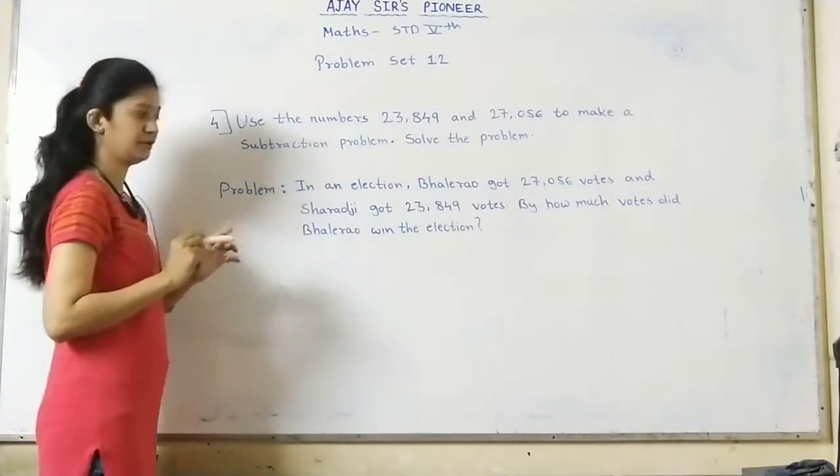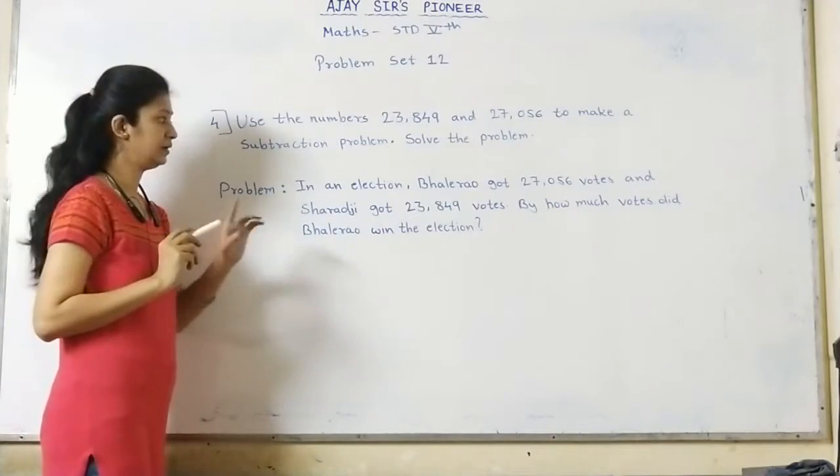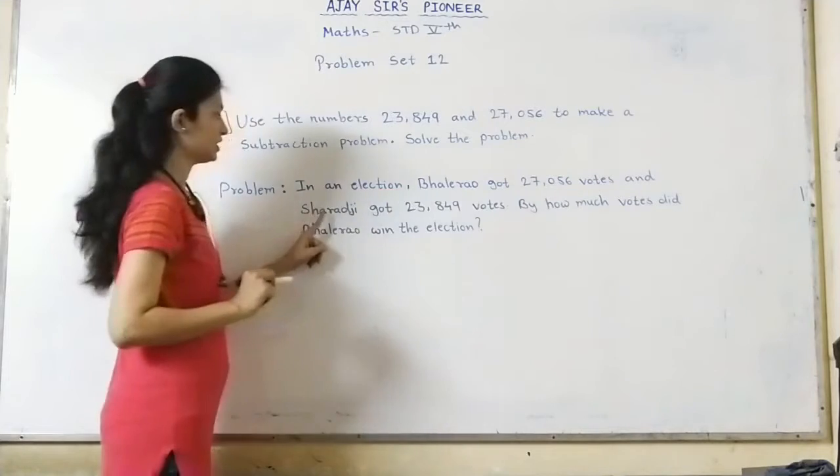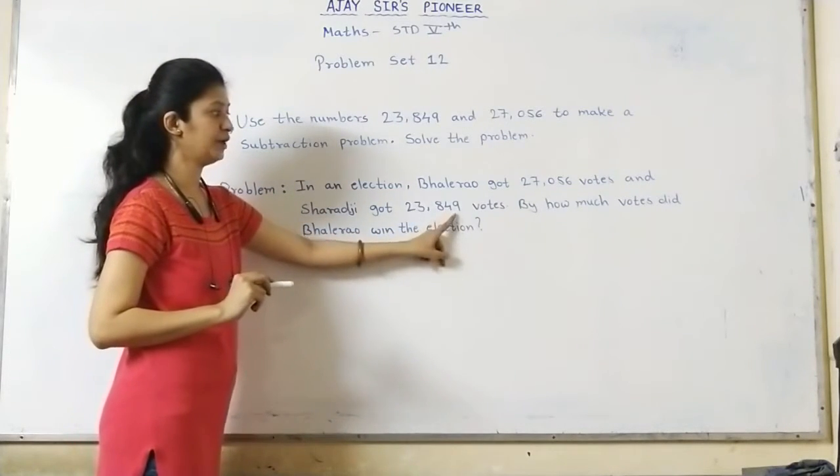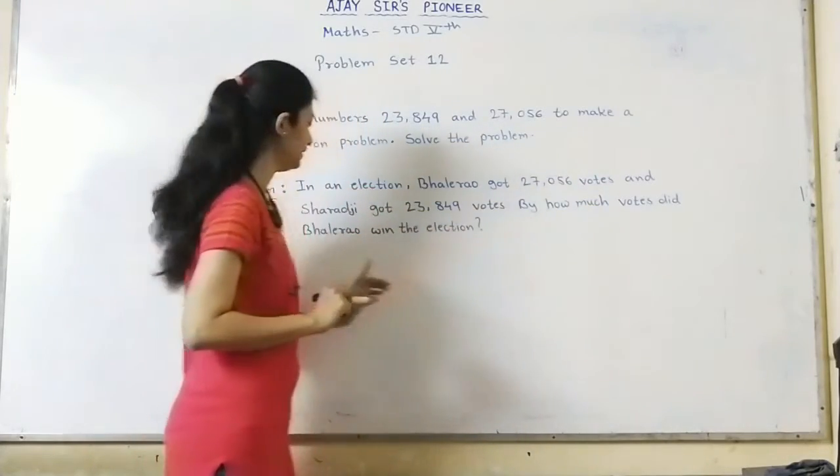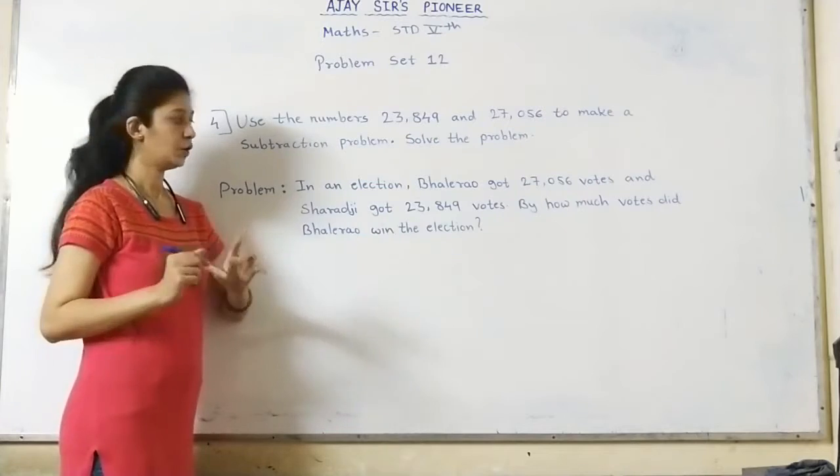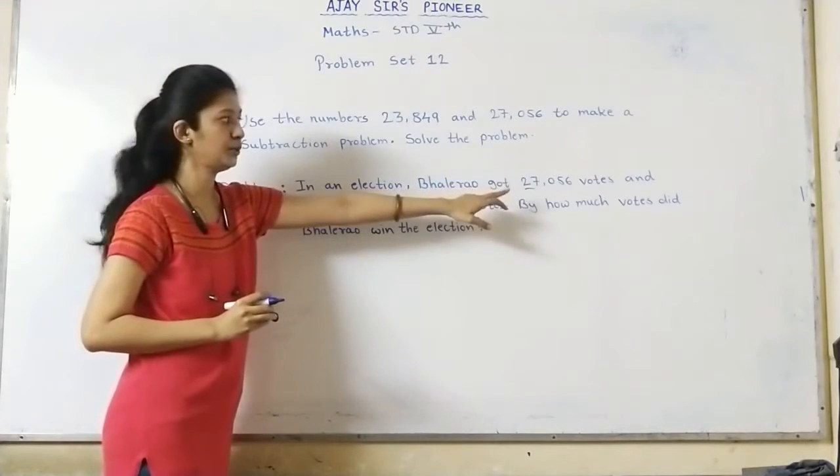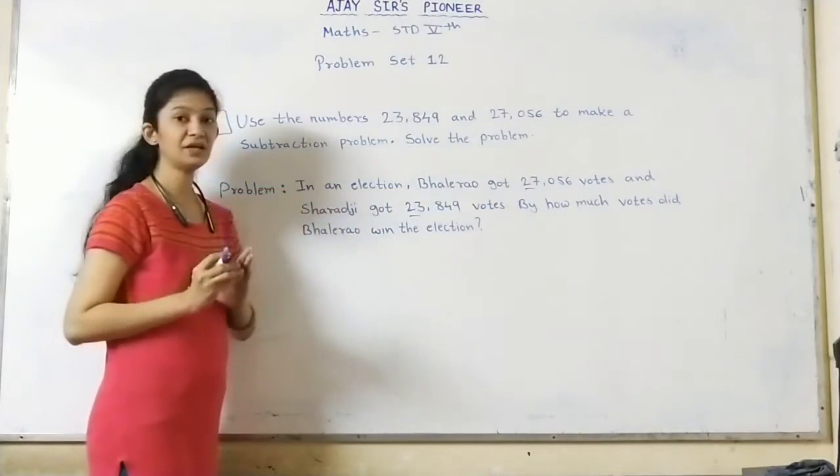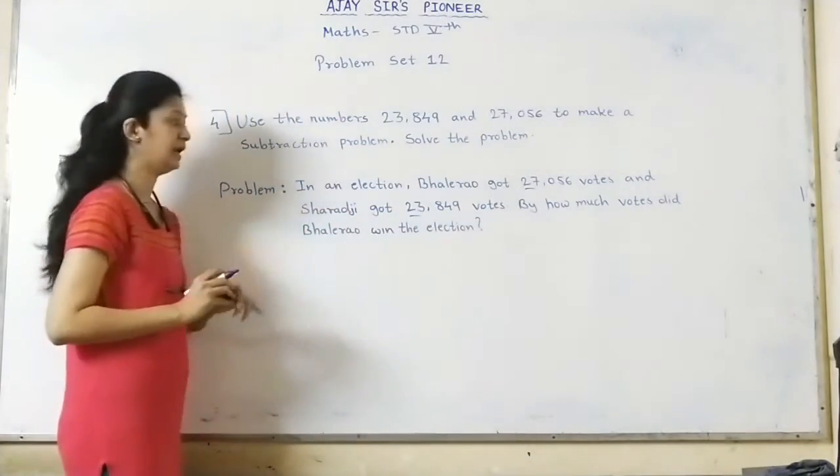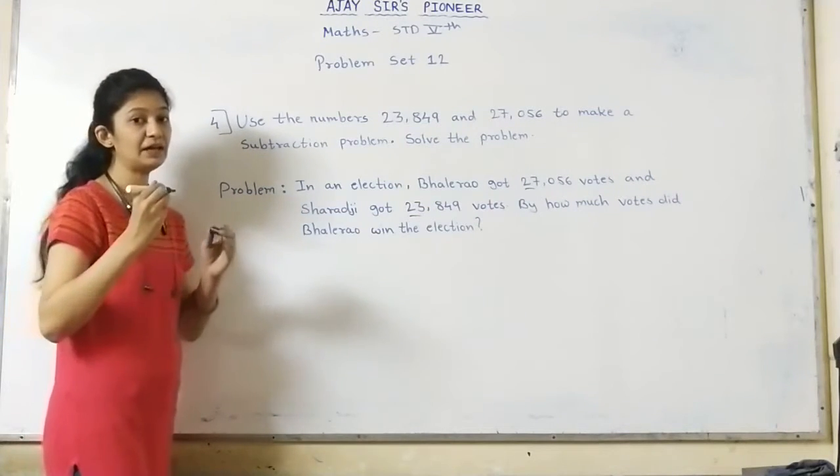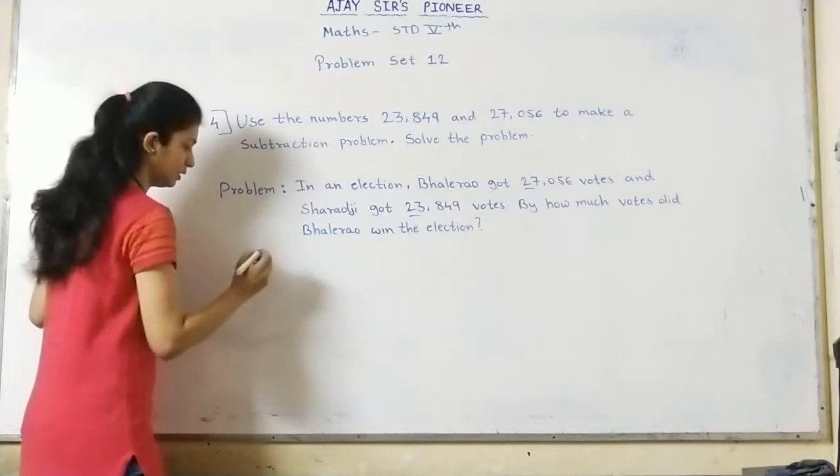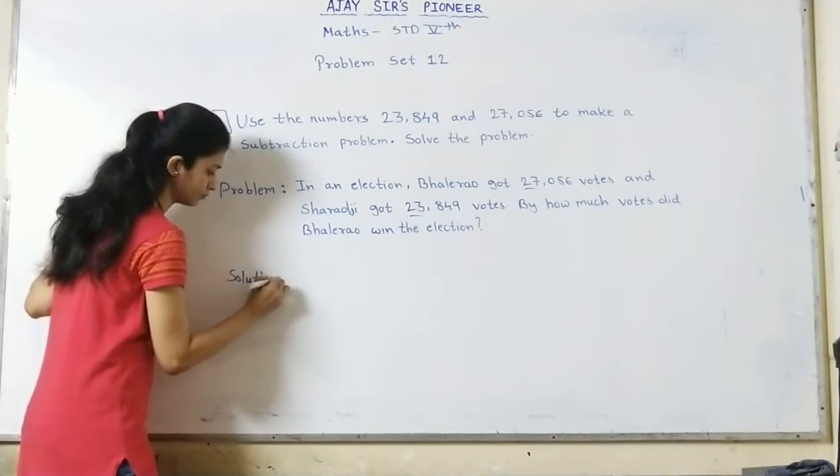Children, you can write any kind of question with these numbers. You can make your own question with using these numbers, and then subtract. I have given you a problem: In an election, Bhalerao got 27,056 votes and Sharadji got 23,849 votes. By how much votes did Bhalerao win the election?